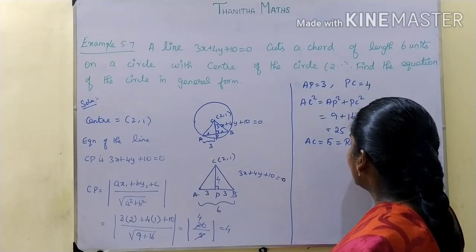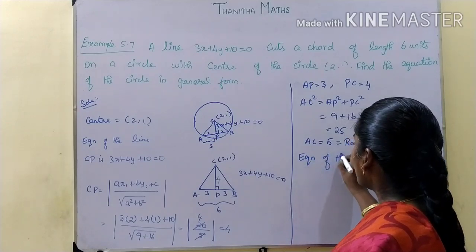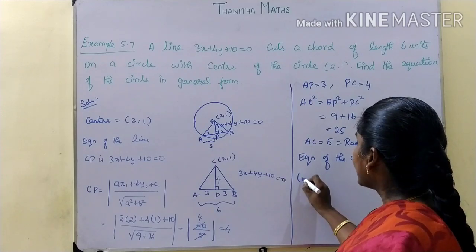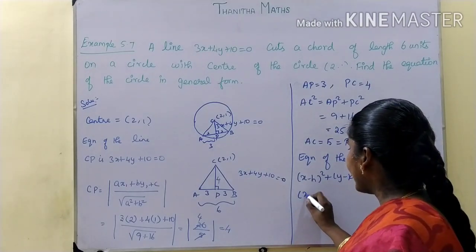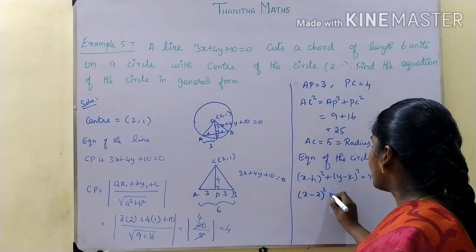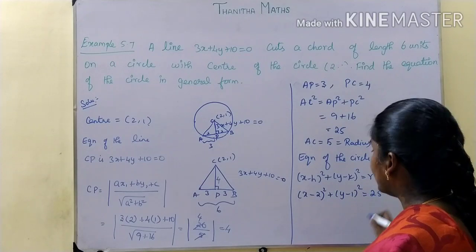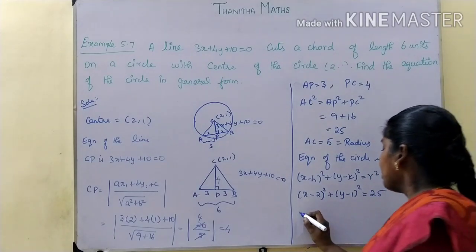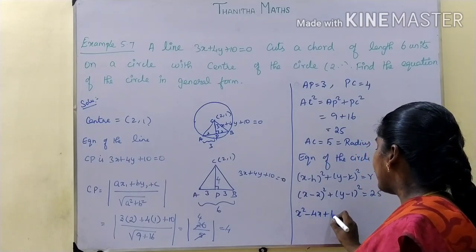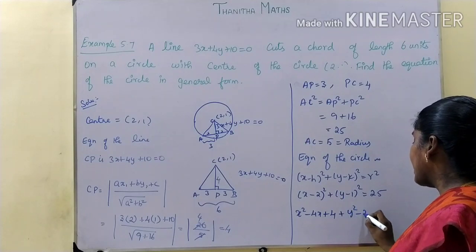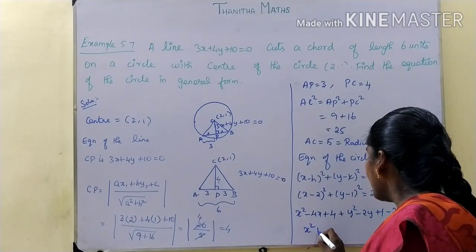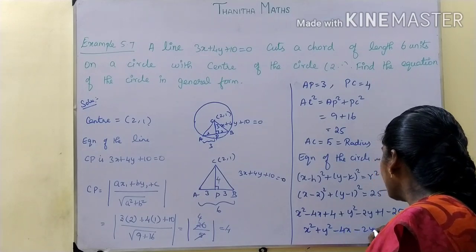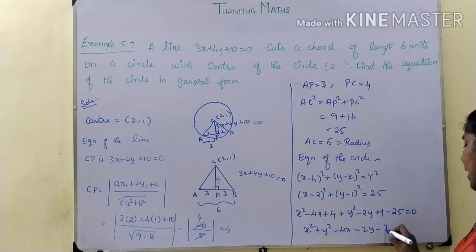The radius is 5. The equation of the circle is: x minus h whole square plus y minus k whole square equals r squared. Substituting center 2,1 and r squared equals 25: x minus 2 whole square plus y minus 1 whole square equals 25. Expanding: x squared minus 4x plus 4 plus y squared minus 2y plus 1 minus 25 equals 0. So the required equation is x squared plus y squared minus 4x minus 2y minus 20 equals 0.